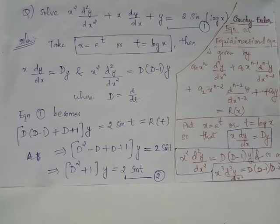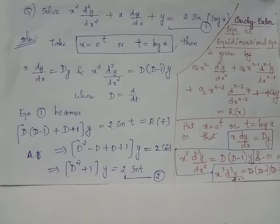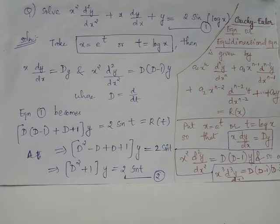We will find the solution of equation 2, which is a differential equation with constant coefficients. The auxiliary equation is given by m² + 1 = 0, and the particular integral is 1/f(D) acting on the right-hand side, which is 2 sin t.